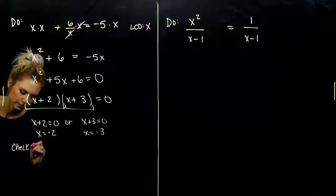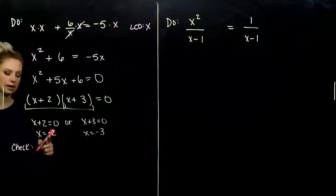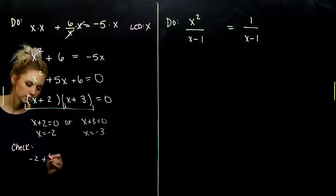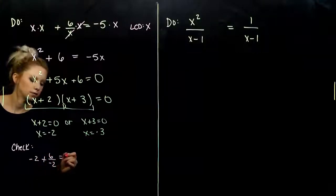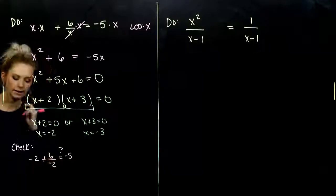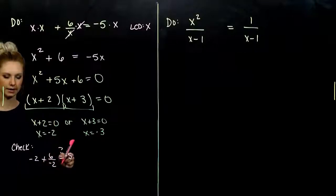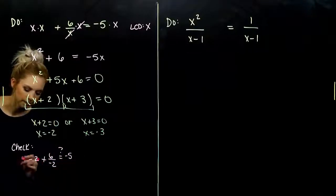Let's check. The first one, when I plug in negative two, I've got negative two plus six divided by negative two. Is that equal to negative five? I've got negative two minus three. Yes, that does equal negative five.